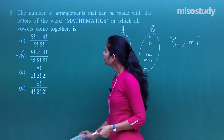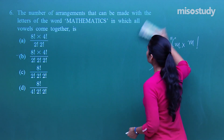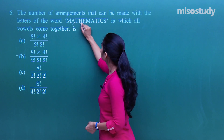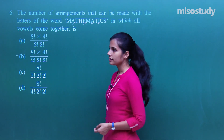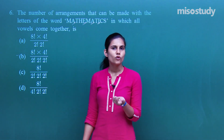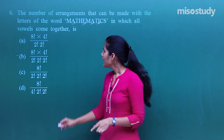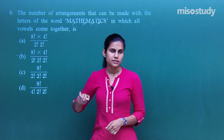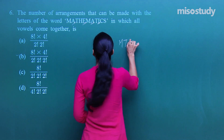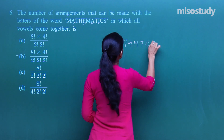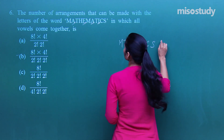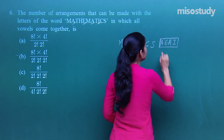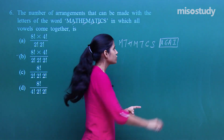Next: find the number of arrangements of the letters of the word 'mathematics' in which all vowels come together. The vowels are A, E, A, I — four vowels. The remaining consonants are M, T, H, M, T, C, S — seven letters. We treat all four vowels as one single unit since they must stay together.